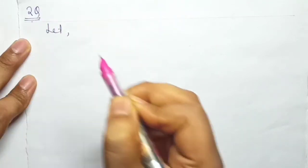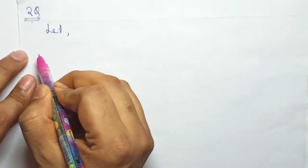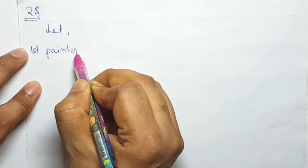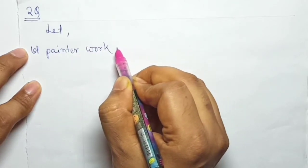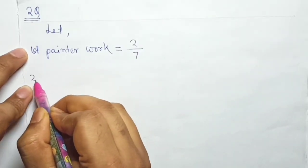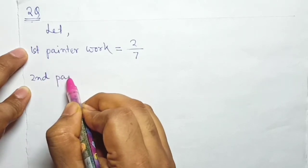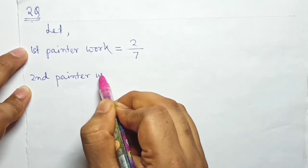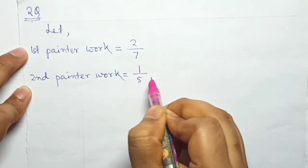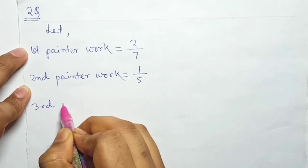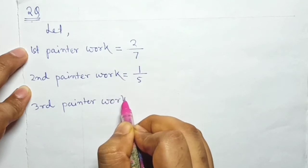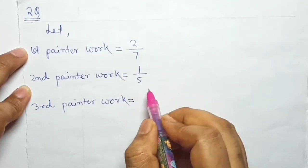Question number two. Let first painter work equal to 2/7. Second painter work equal to 1/5. Third painter work equal to 3/10.